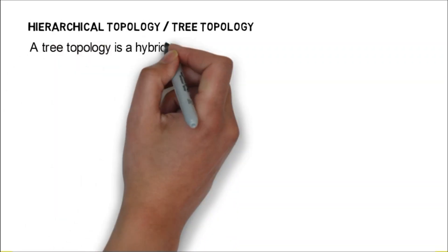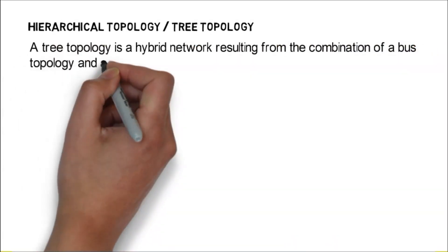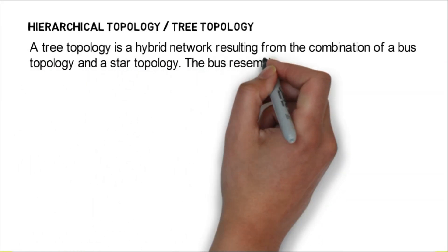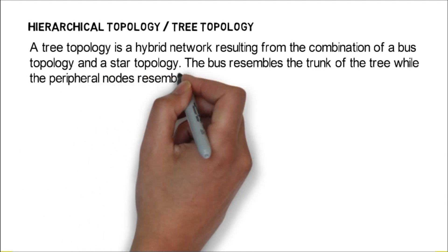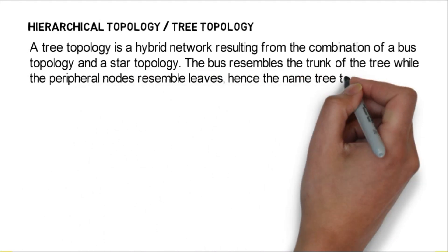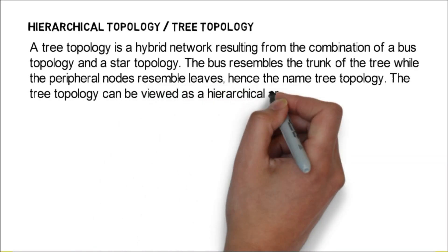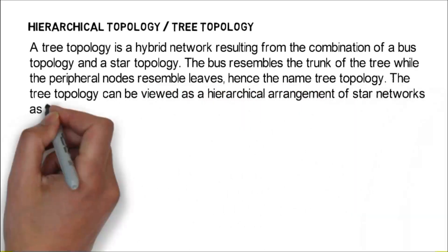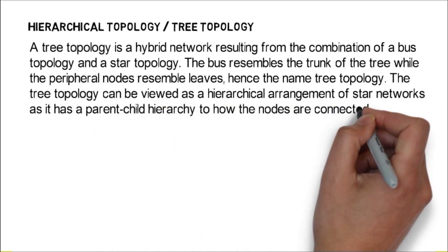Hierarchical topology or tree topology. A tree topology is a hybrid network resulting from the combination of a bus topology and a star topology. The bus resembles the trunk of the tree while the peripheral nodes resemble leaves, hence the name tree topology. The tree topology can be viewed as a hierarchical arrangement of star networks as it has a parent-child hierarchy to how the nodes are connected.